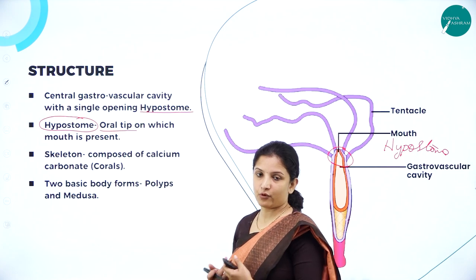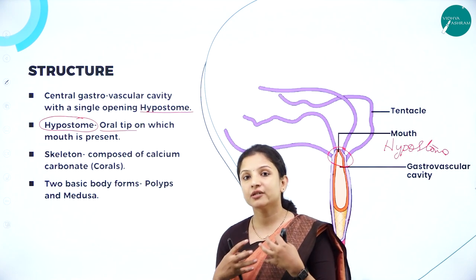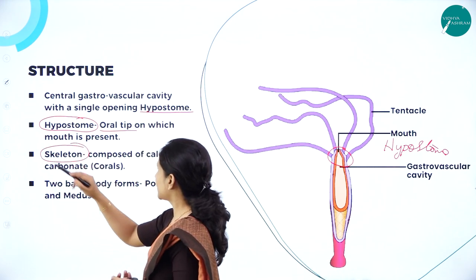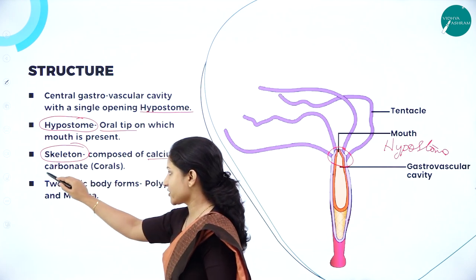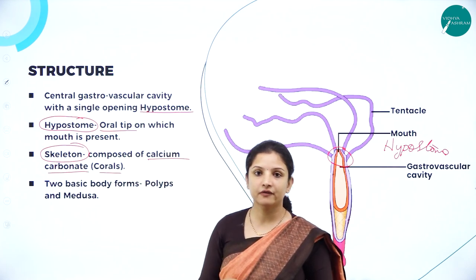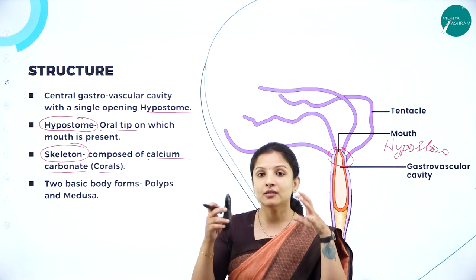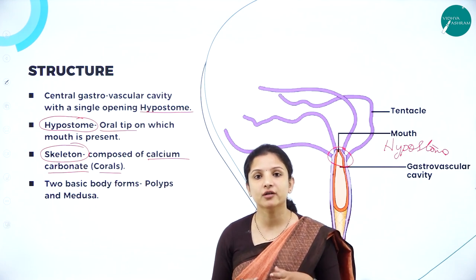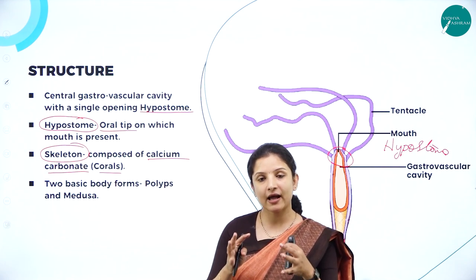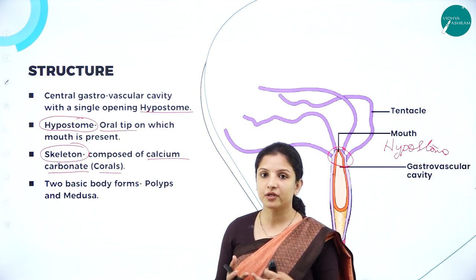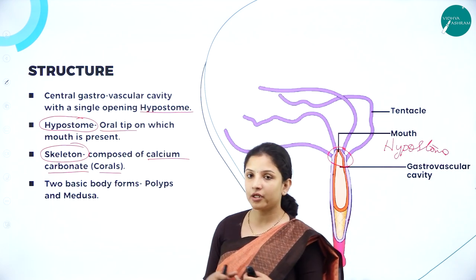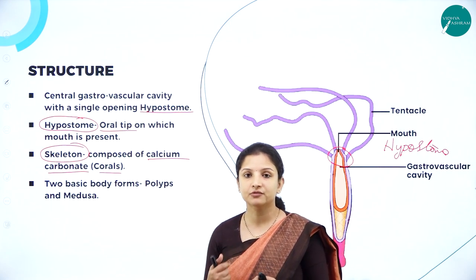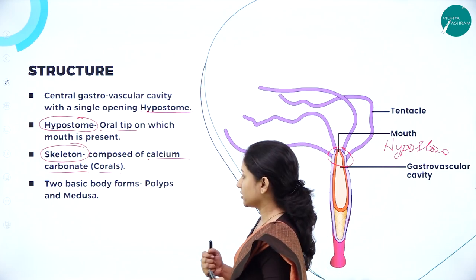Their skeleton is composed of calcium carbonate, especially in corals. You may have heard about the Great Barrier Reef, which has the largest coral collection in the world. These corals have a hard calcareous covering, meaning the skeleton or covering is made up of calcium carbonate.